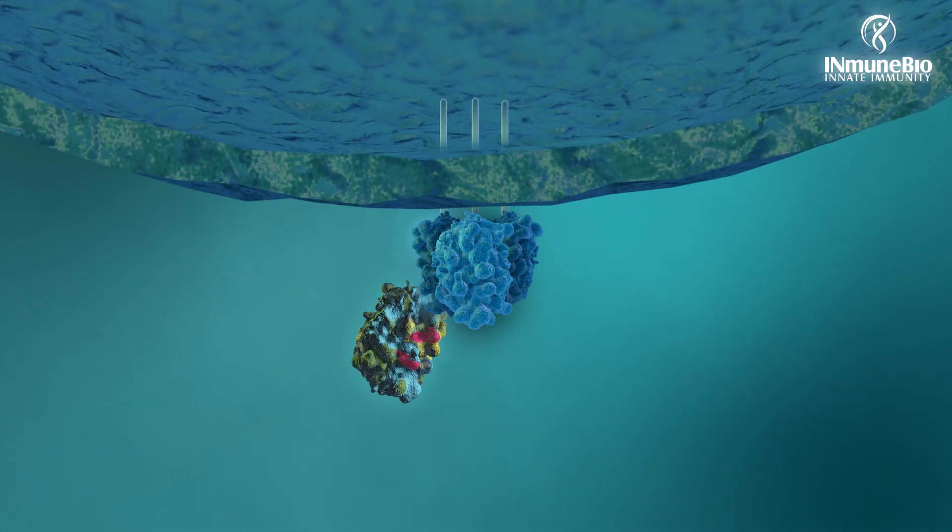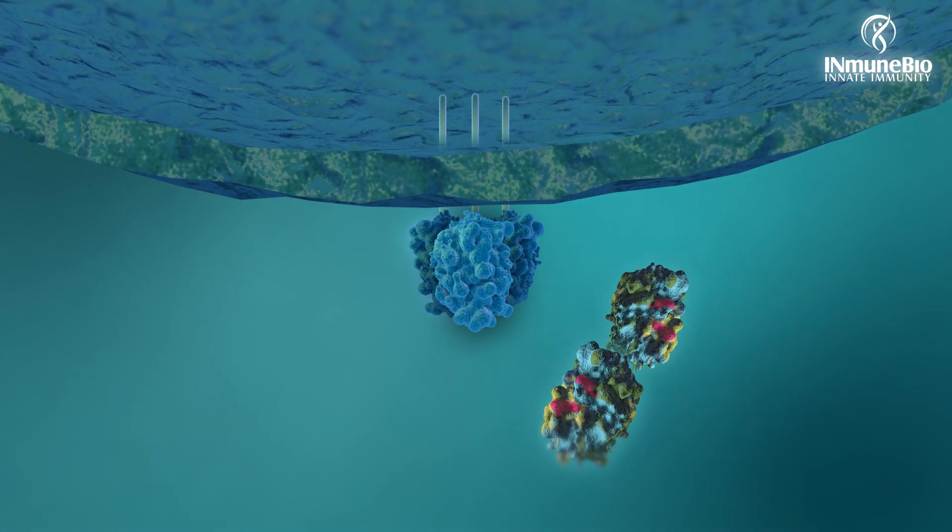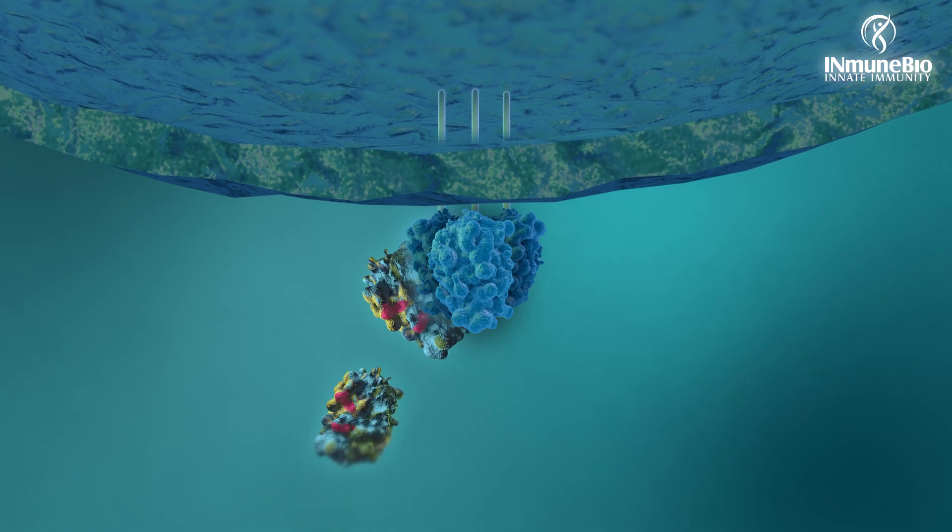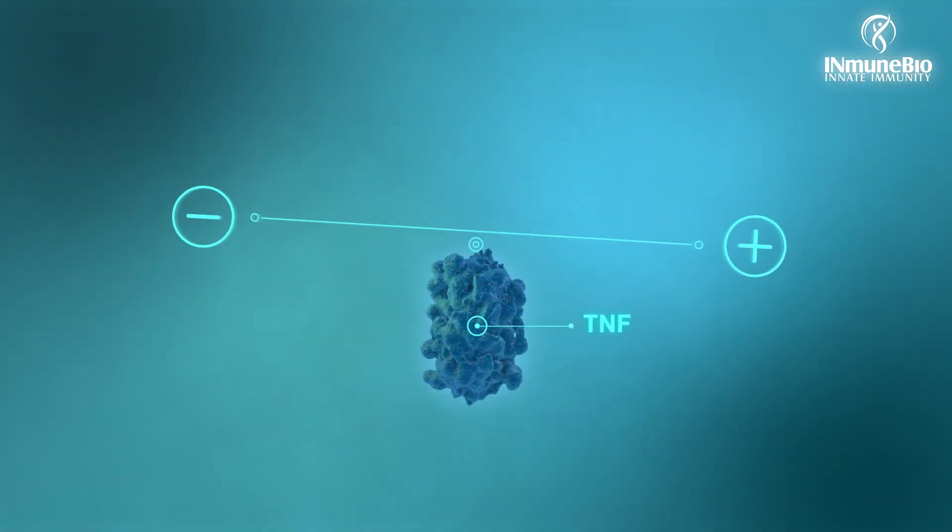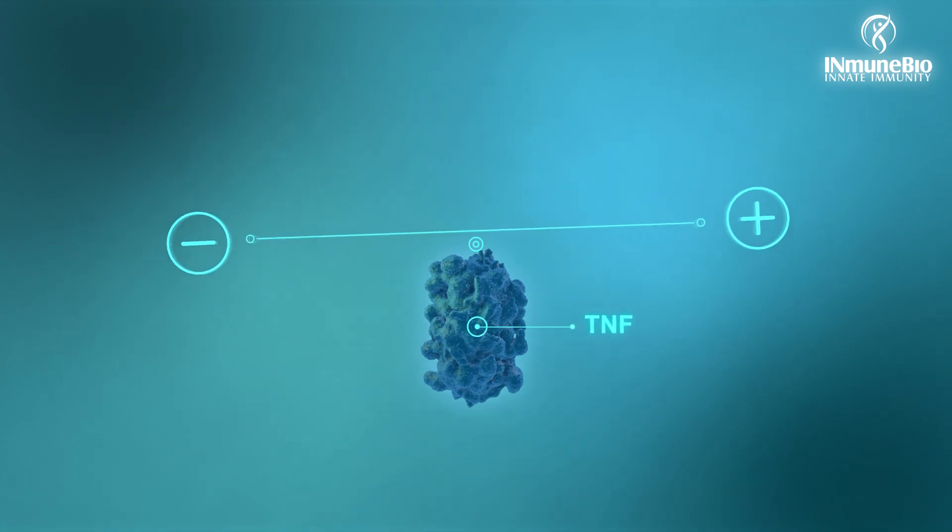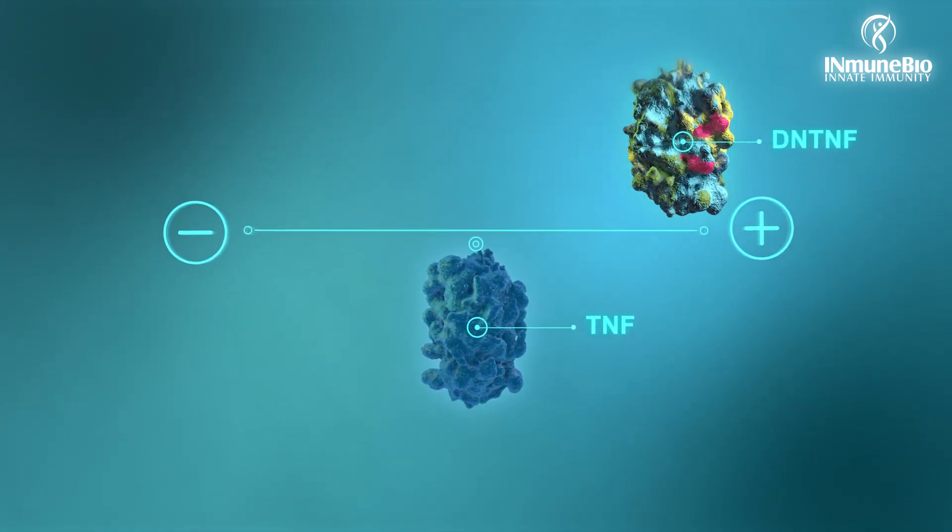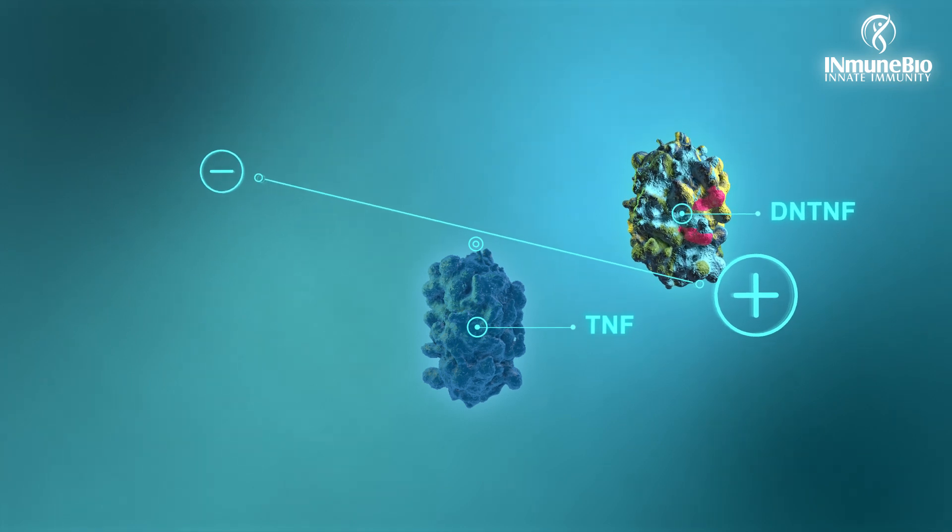The good TNF is bound to the membrane, making it impossible for DN-TNF to exchange. Due to this selectivity, DN-TNF stops chronic inflammation and polarizes TNF activity toward its supportive functions.